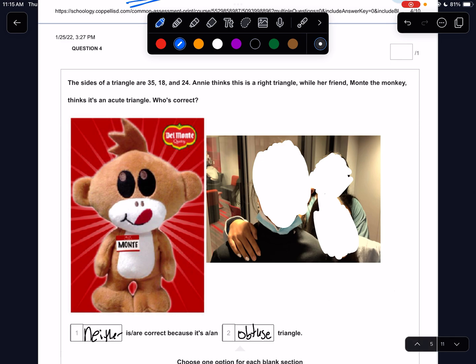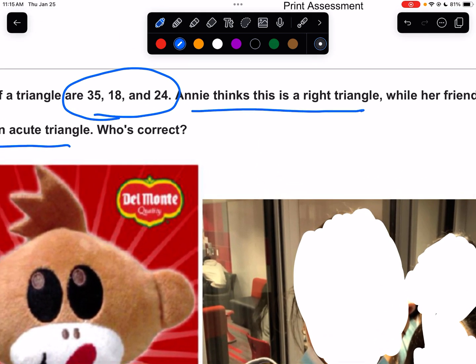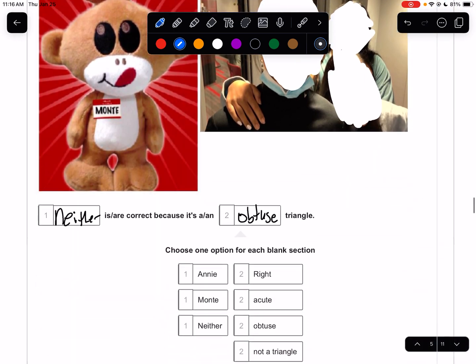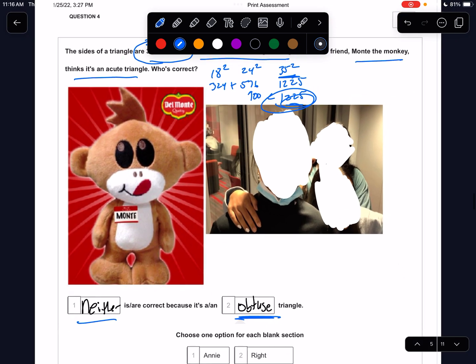All right. The sides of a triangle are this. Annie thinks it's a right triangle, while her friend, Monty the monkey, thinks it's an acute triangle. Who's correct? First thing I would do, if possible, is reduce. I can't. We need to check that it's even a triangle. So what is 18 plus 24? 18 plus 24 is 42, and this is 35. So is it a triangle? Yes. Once you know it's a triangle, then you square the numbers. 18 squared, 24 squared, 35 squared. So 18 squared is 324, 24 squared is 576, and 35 squared is 1225. Add those together. We got 324 plus 576, and that is 900 versus 1225. When C squared is bigger, it is obtuse.